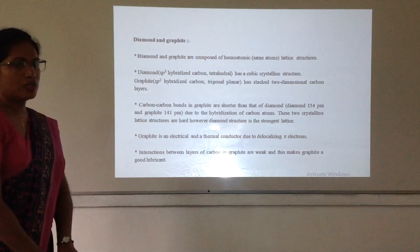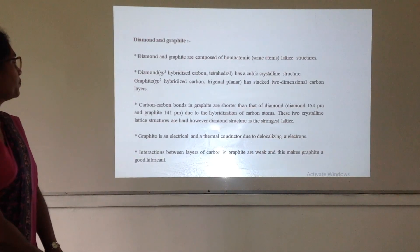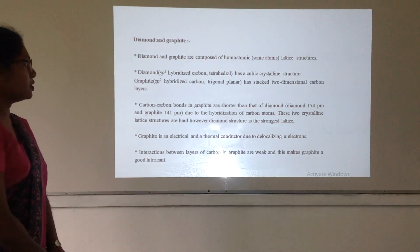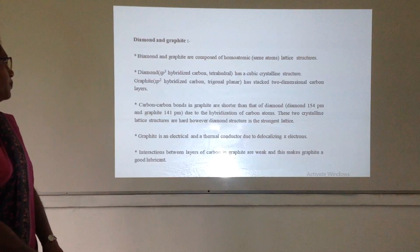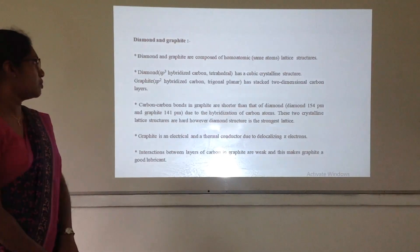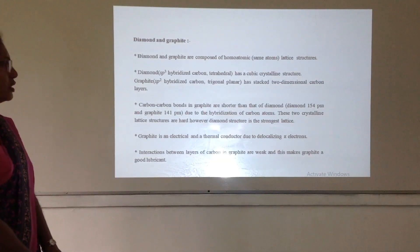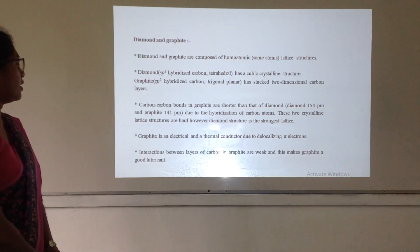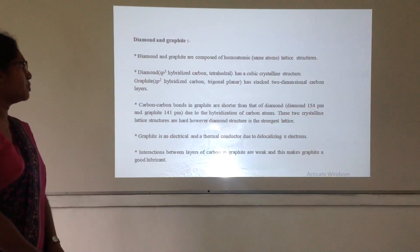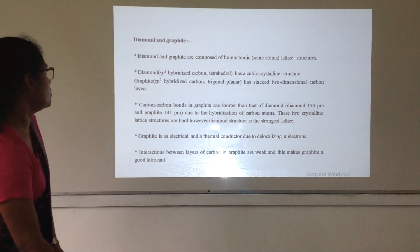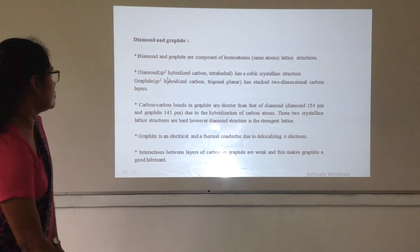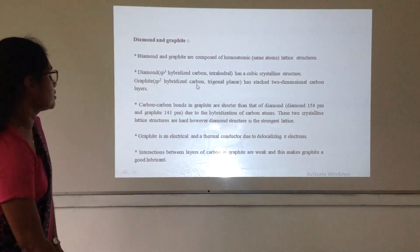Now let's talk about diamond and graphite. Diamond and graphite are composed of the same atoms — we call these homoatomic lattice structures. However, they show two different hybridizations: diamond shows sp3 hybridized carbon, and graphite shows sp2 hybridized carbon. Because of that hybridization, they show different structures — sp3 hybridized molecules have a tetrahedral structure, and sp2 hybridized molecules have a trigonal planar structure.